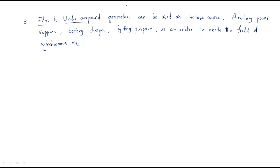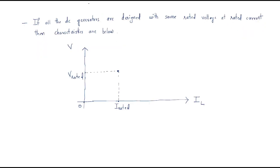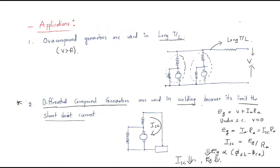Third, flat and under compound generators can be used as voltage sources for auxiliary power supplies, battery chargers, and lighting purposes. They are also used as exciters to excite the field of synchronous machines. All DC generators are designed with a rated voltage at rated current, and further characteristics will be discussed in the next topic.